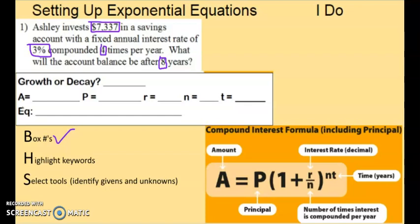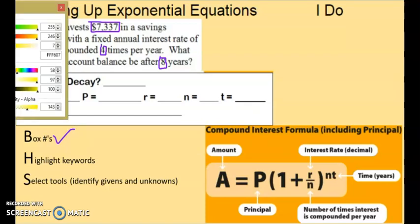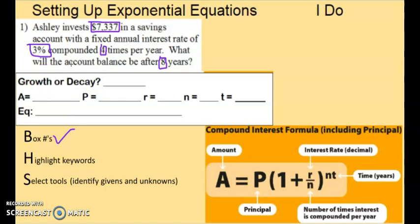Now let's highlight our keywords. So for our keywords, we have money, the dollars. Invests, this is how much it originally is. It's an annual interest rate, 3%. And it's compounded a certain amount of times per year, not just once. And then we have years.